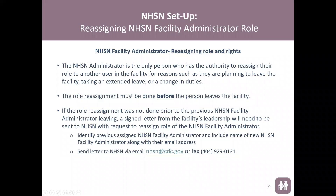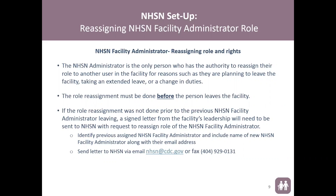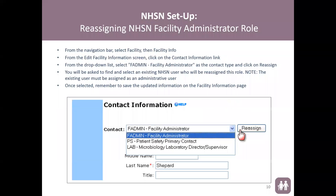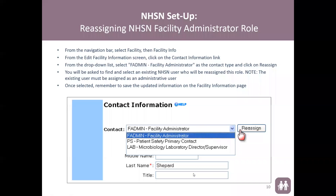The last step is reassigning the NHSN Facility Administrator role. The NHSN Facility Administrator is the only person who has authority to reassign their role to another user. From the navigation bar after logging in, select Facility, then Facility Info. From the Edit Facility Information screen, click on the Contact Information link. On the Contact Information page, from the drop-down list select FADMIN Facility Administrator, then enter the person's name and select Reassign.